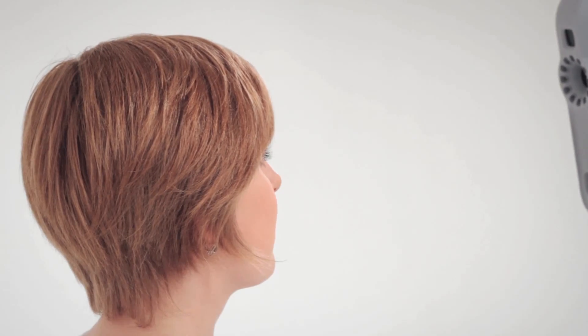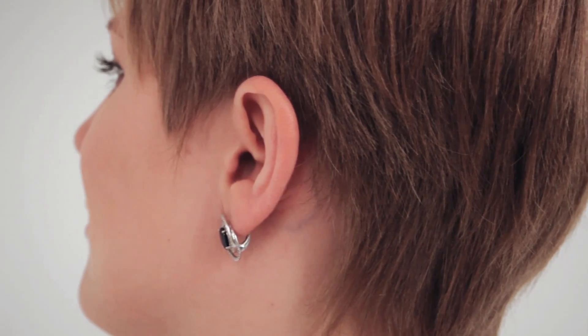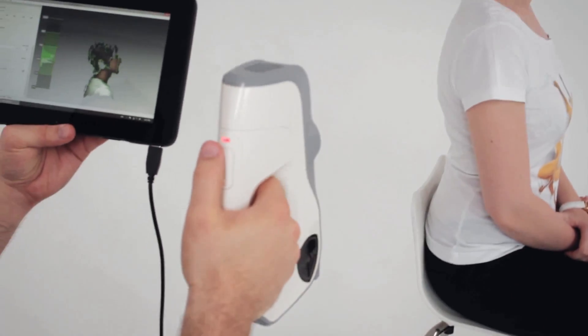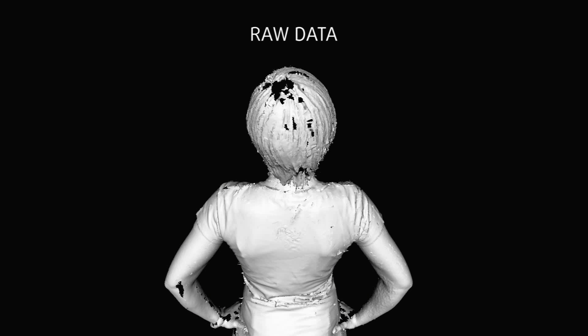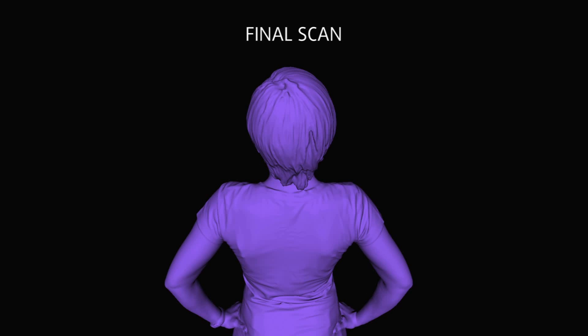Initially, your scan might look like it contains holes, and that there's not enough data to recreate the surface of the hair, even though your scanning was thorough and your trajectory good. In most cases, everything is fine, and you will have collected enough data. The final scan will always look much better than the raw data.